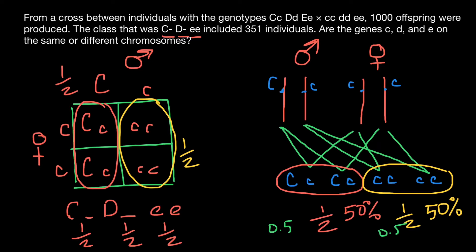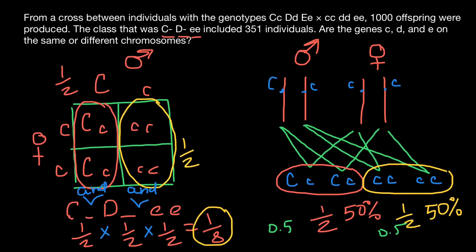We are looking for individuals dominant for gene C AND dominant for gene D AND recessive for gene E. When we connect probabilities with AND, we apply the product rule and multiply all independent probabilities. One half multiplied by one half equals one quarter, multiplied by one half equals one eighth. So we expect one eighth of all progeny to belong to this phenotype.